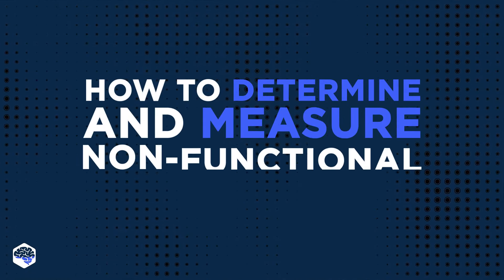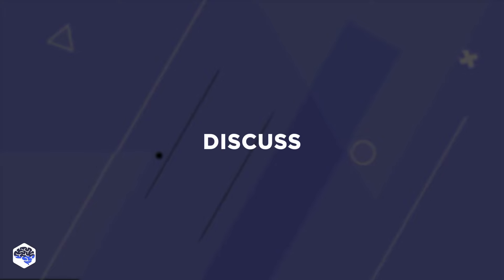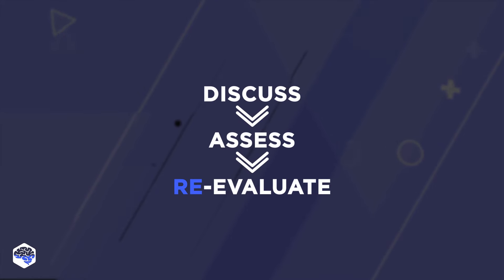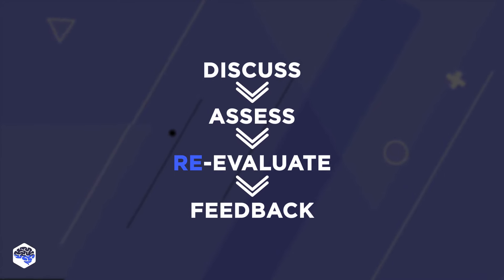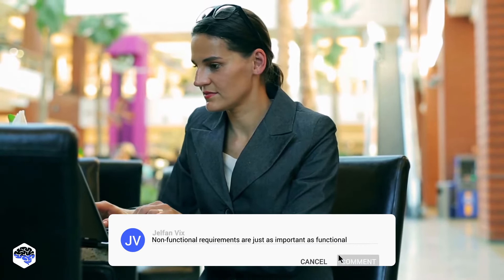How do you determine and measure non-functional requirements? Non-functional requirements describe not what should be implemented, but rather how. From our experience, you need to adopt the following practices: discuss non-functional criteria with all involved parties early on, assess each requirement with a numeric score, re-evaluate non-functional requirements during development, testing, maintenance, and scaling, and make sure to integrate users' feedback. Do you think it's much more important to determine the non-functional requirements? Write your thoughts in the comments section.